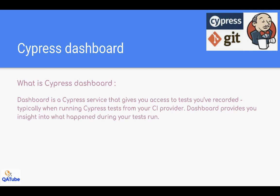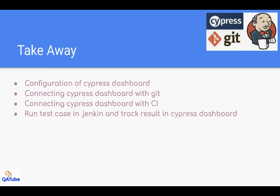These are the takeaways: configuration of Cypress Dashboard, connecting Cypress Dashboard with Git, connecting Cypress Dashboard with CI — in our case we are using Jenkins — and running test cases in Jenkins and tracking the results in Cypress Dashboard. This is an awesome feature: you are running your test cases in Jenkins and tracking all your results, seeing how many test cases pass, all within Cypress Dashboard.